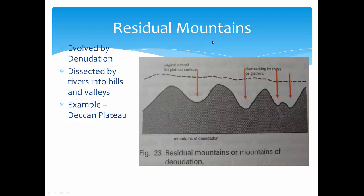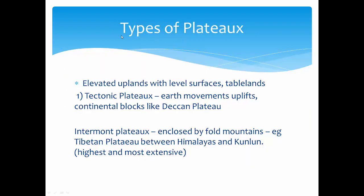Residual mountains: these were originally an almost flat plateau surface. Due to denudation — down-cutting by rivers or glaciers — valleys are carved into the plateau, and the remaining elevated portions appear as mountains. These are dissected by rivers into hills and valleys. One example is the Deccan Plateau — the mountains it contains are residual features formed due to river erosion.